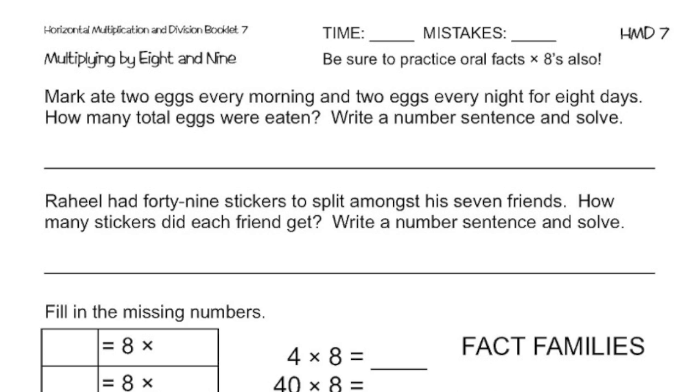We're going to start on page 5 and work with the first word problem at the top. It says, Mark ate 2 eggs every morning and 2 eggs every night for 8 days. How many total eggs were eaten? Write a number sentence and solve.